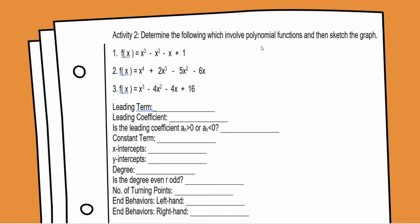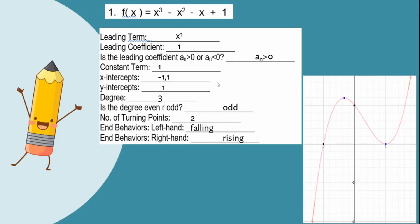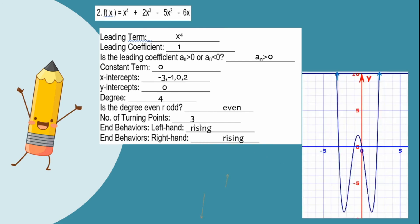Activity: determine properties and sketch graphs. Number 1: f(x) = x³ - x² - x + 1. Leading term is x cubed, leading coefficient is 1 (positive), constant term is 1. X-intercepts: negative 1 and 1. Y-intercept: 1. Degree is 3 (odd), so number of turning points is 2. End behavior is falling to the left and rising to the right.